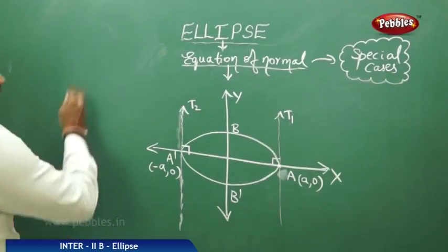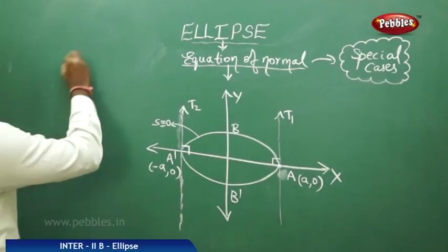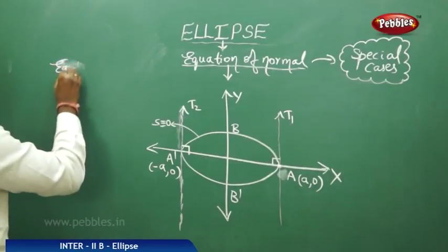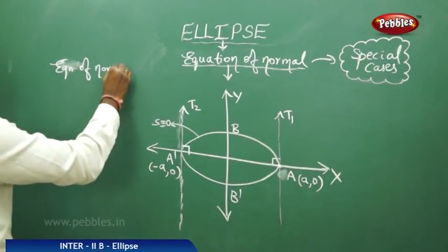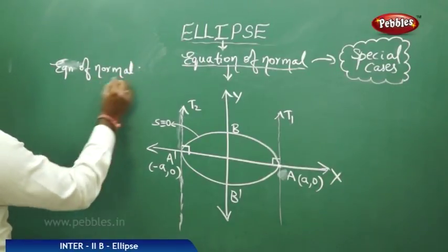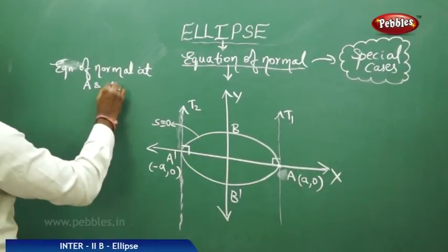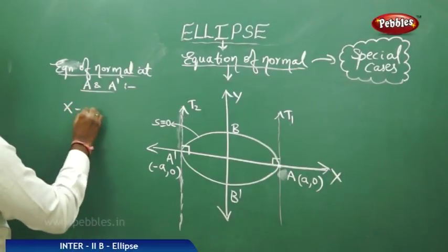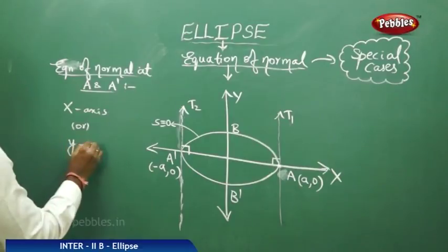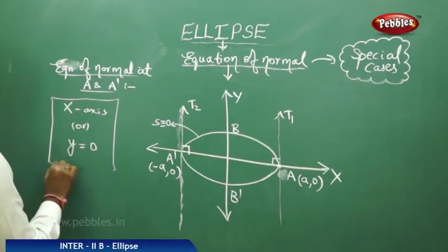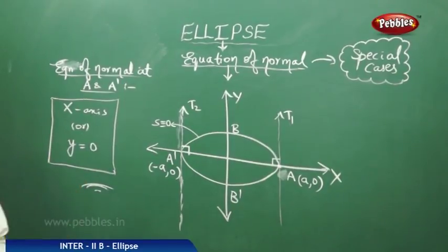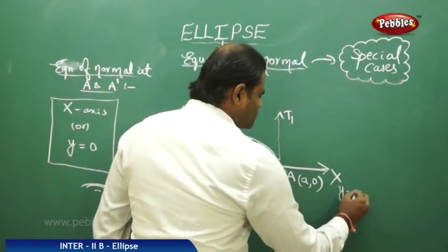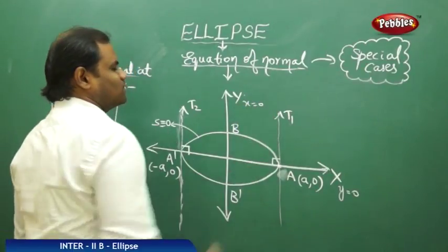This gives us the same conclusion as in the case of b and b dash, which says that for the ellipse s = 0, the equation of normal at a and a dash is given by the x-axis, or y = 0. In the previous case it was x = 0.